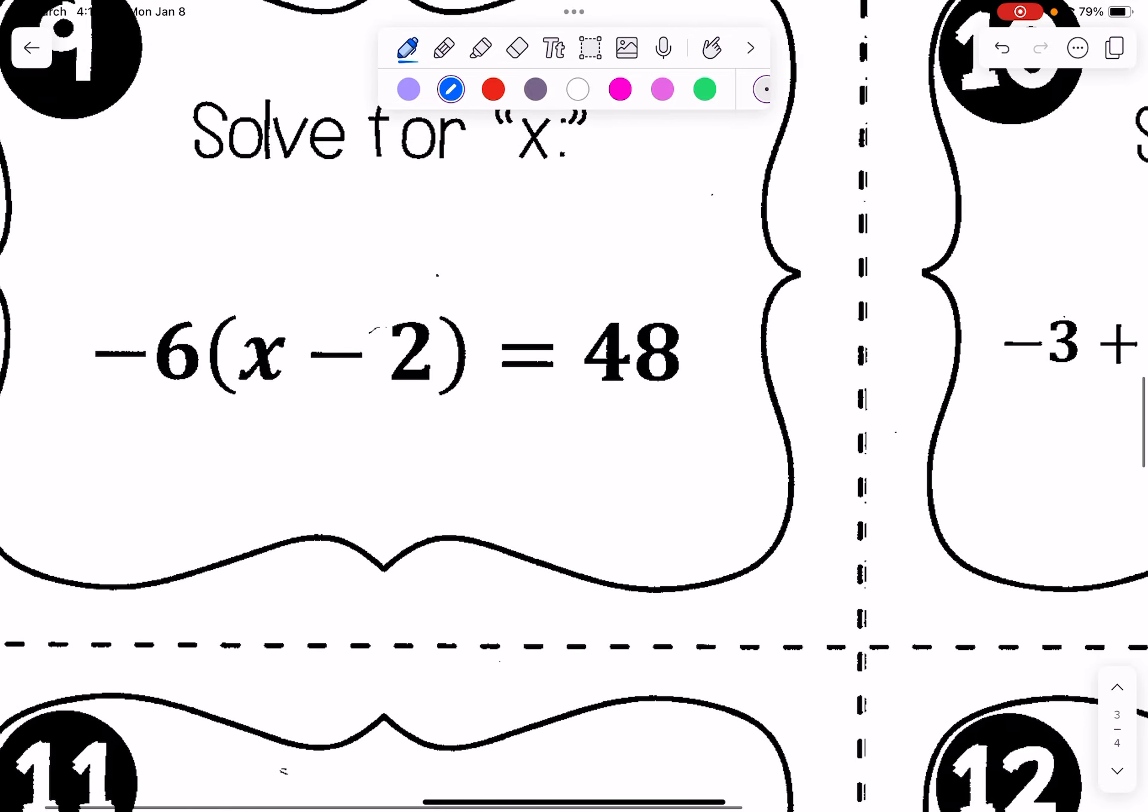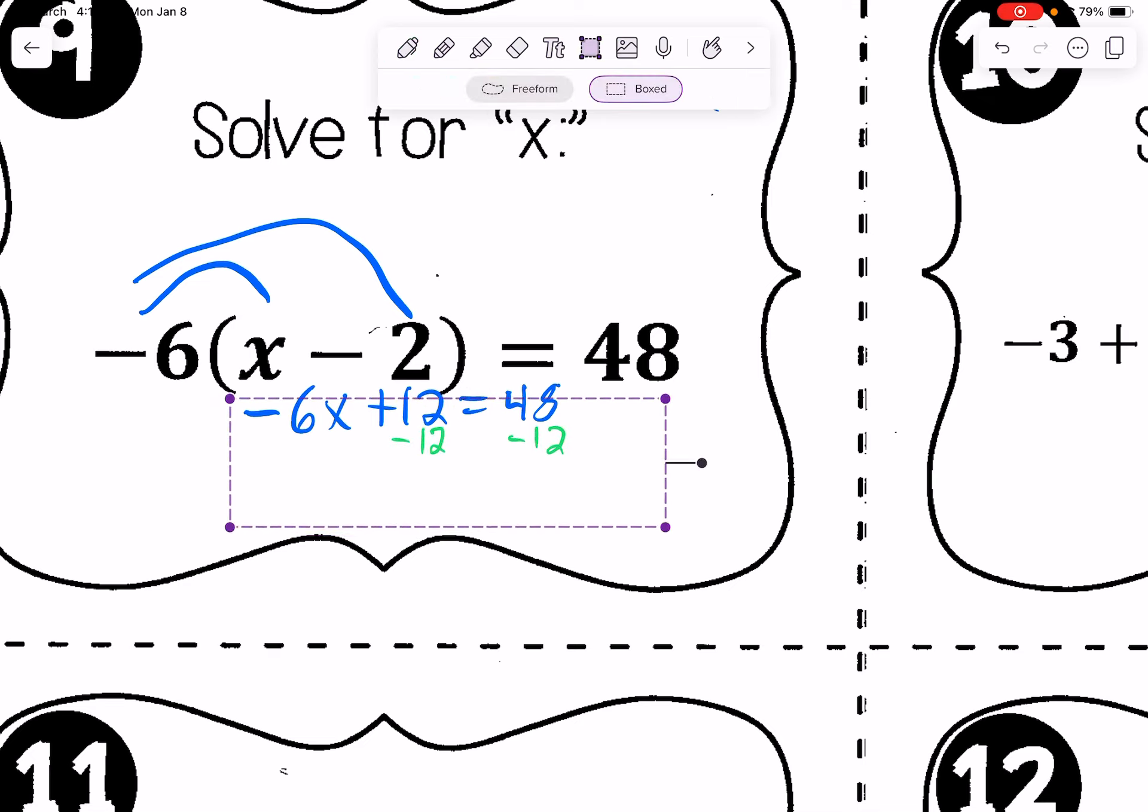We're getting close. Power through. For negative 6, we'll use the distributive property with that. We get negative 6x. Negative 6 times negative 2 is positive 12. So we have negative 6 plus 12 equals 48. We'll subtract 12.